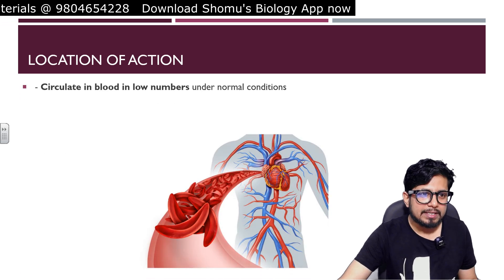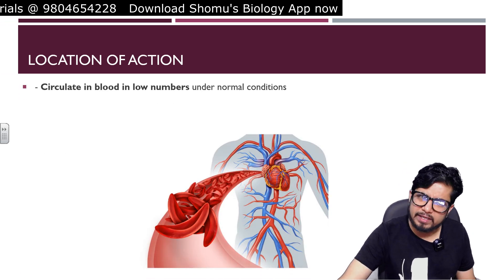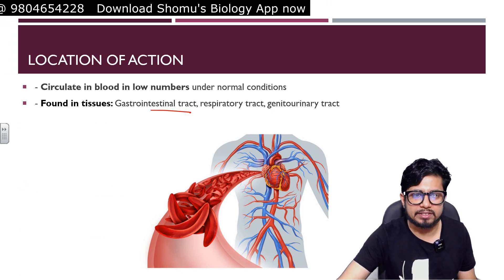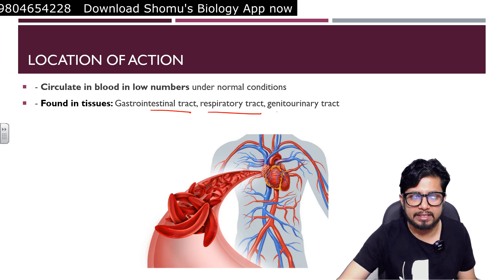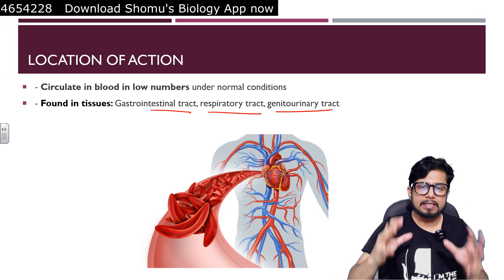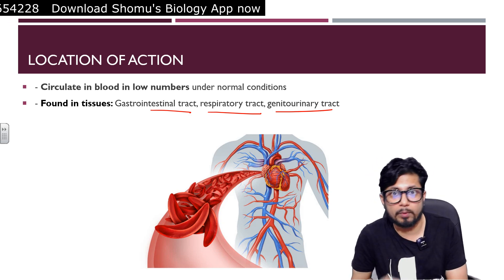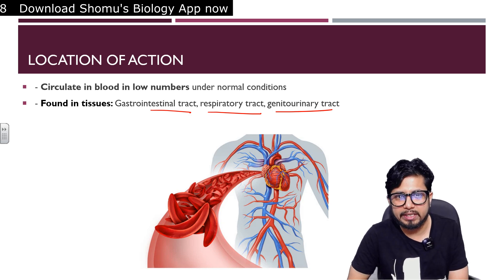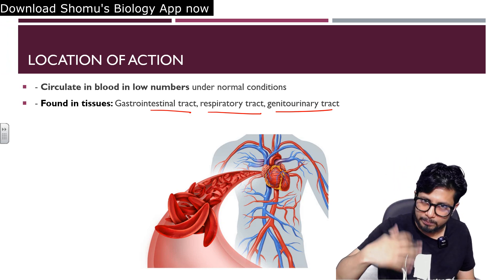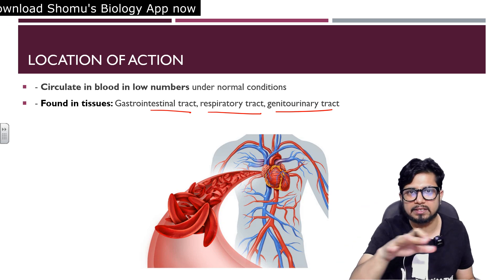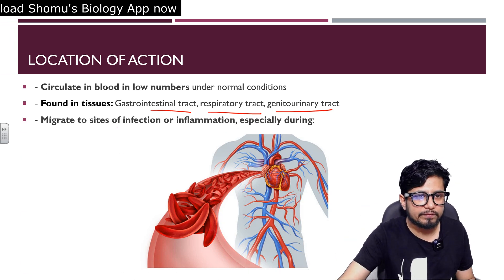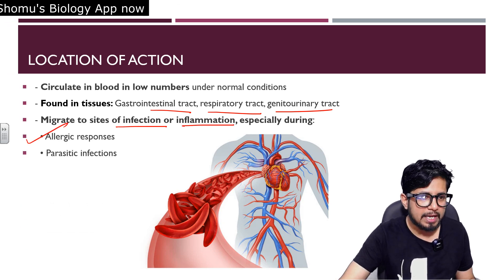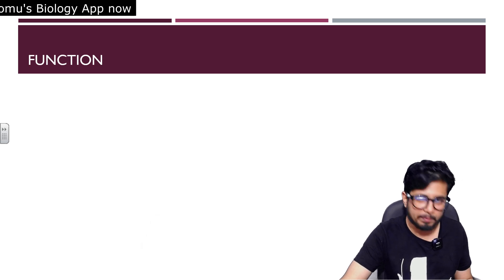Regarding location of action: eosinophils circulate in the blood in very low numbers under normal conditions. But they are found in tissues like the gastrointestinal tract, respiratory tract, and genitourinary tract. They migrate to sites of infection or inflammation, especially during allergic responses and parasitic infections. In case of parasitic infection — not generally bacterial or viral — they are particularly activated in cases of worm or helminth infections.